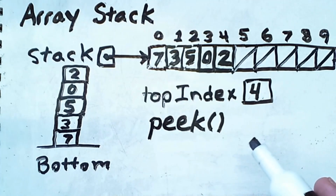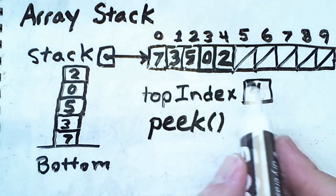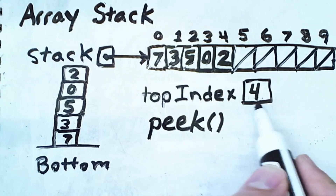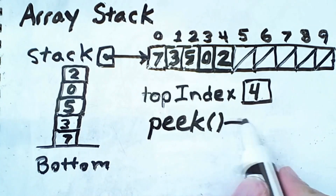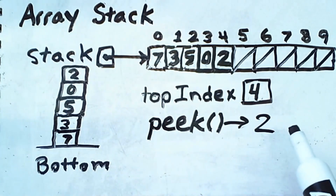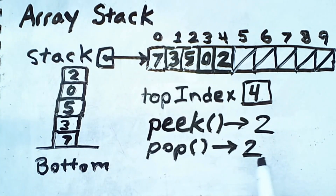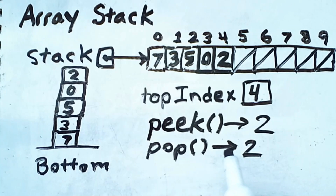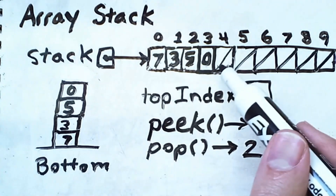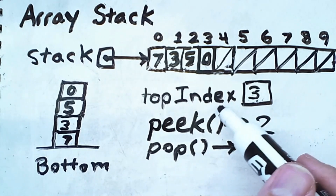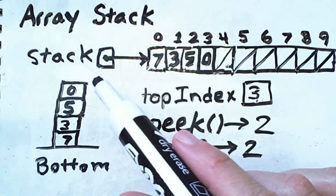If we were to peek at the stack contents at this point, we would simply look up the value in the array at the index indicated by top index. Because top index is currently 4, a call to peek would return a value of 2. Calling pop would also return 2, but in addition to returning that value, we need to modify the stack to remove 2 from the data structure. This involves setting the former top index to null and decrementing the top index value.